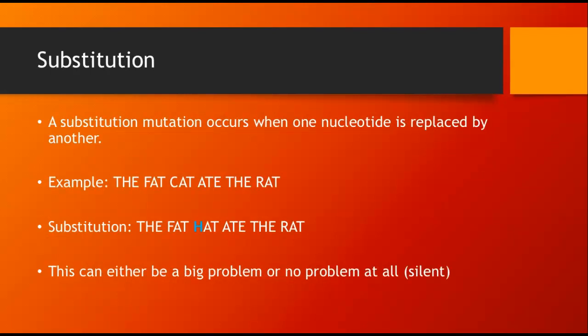So the first one I want to talk about is a substitution. A substitution mutation occurs when one nucleotide gets replaced by another. So instead of A's, T's, G's, and C's, pretend your codons, or basically your genetic code, spells out the fat cat ate the rat. Now, in a substitution, you will substitute one nucleotide and replace it for another. So one A and replace it for a G, or one A and replace it with a T. Now, that substitution, let's say we're going to replace C with H. So now our sentence reads, the fat hat ate the rat. So this can either be a huge problem, because think about it, this sentence really doesn't make any sense. Hats don't eat anything. Or it could be no problem at all, and if it is, we call a silent mutation.